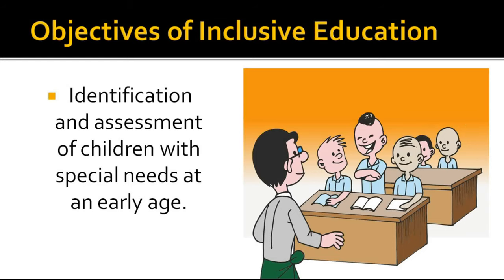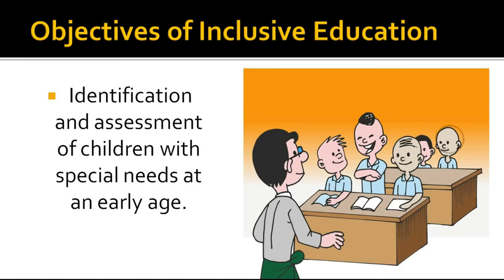The first objective of inclusive education is identification and assessment of children with special needs at an early age. Early identification of children with special needs is very important. Through this, those negativities in the children can be detected at a very early stage which hinders their academic development. At the early stage, these problems can be fixed more easily before they become more hazardous.